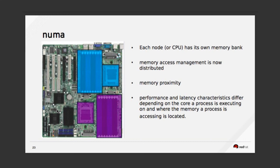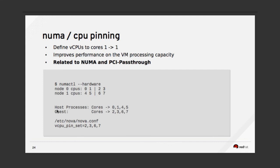Using NUMA and CPU pinning together, you can dedicate which CPUs are shown to a specific instance — pinning the CPU — and then you relate NUMA, PCI pass-through, and whatever other features I mentioned in this presentation together to get better performance. You must enable the scheduler's NUMA topology filter in nova.conf.